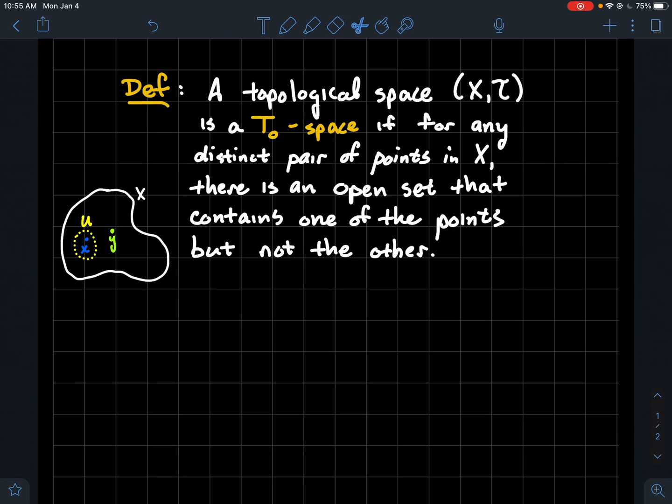So it's some idea about the ability to separate points in the space. So what the separation axioms are sometimes described as is kind of making sure that there are enough open sets to make sure that we can separate points in the space.